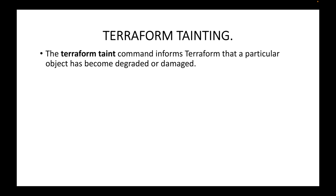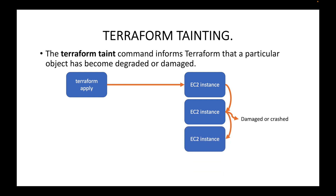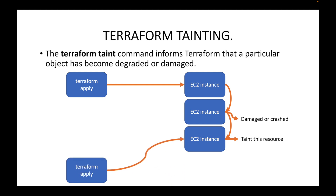Say we launched an EC2 instance using the Terraform apply command, and after some time you find out that the EC2 instance has been damaged, crashed, or degraded. What we can do is tell Terraform to replace this EC2 instance by marking it as a tainted resource. Running that command tells Terraform the resource has been tainted, and the next time we run Terraform apply, it will destroy that damaged or crashed resource and launch a new EC2 instance.